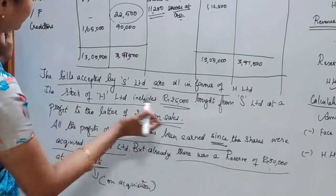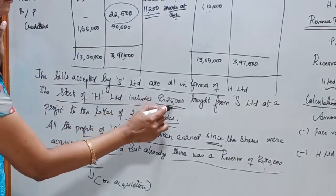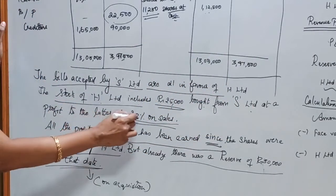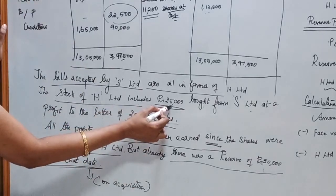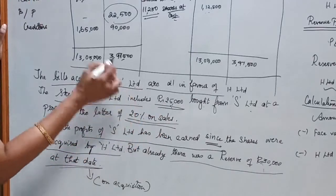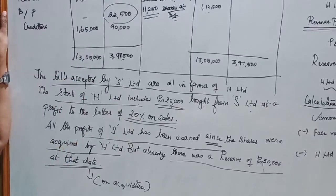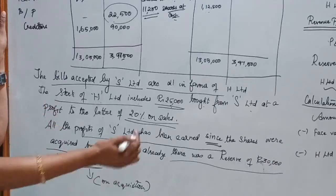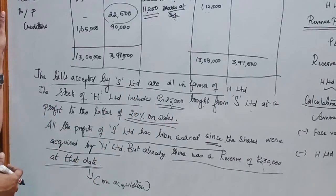The next point is that the stock of H Limited includes Rs.25,000 bought from S Limited at a profit to the latter of 20% on sales. So the stock figure is at selling price and the rate of profit given is 20% on sales. We can calculate the amount of unrealized profit or stock reserve directly by applying 20% on Rs.25,000.